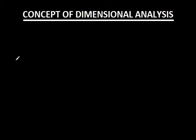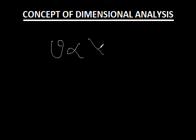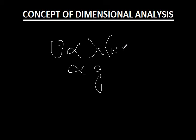Welcome students, we come to this lesson on the concept of dimensional analysis. What do we mean by dimensional analysis? Let us directly go to an example. It is told that the velocity of a stream is found to be directly proportional to the wavelength of water and directly proportional to the acceleration due to gravity.